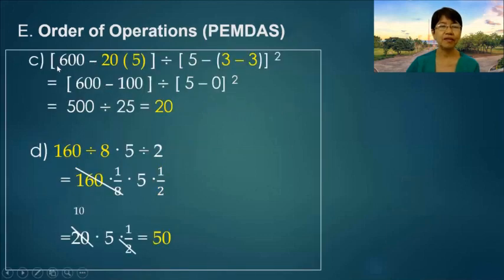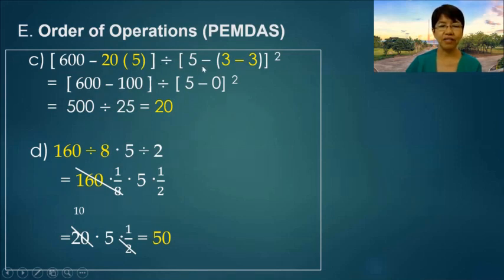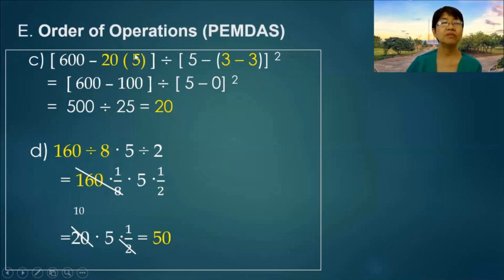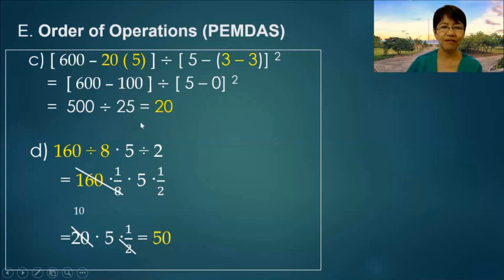Letter C: the quantity 600 minus 20 times 5, divided by the quantity 5 minus the quantity 3 minus 3, raised to the second power. We first operate on the inner expressions: 20 times 5 is 100, and 600 minus 100 is 500. Then 3 minus 3 is 0, so we have 5 raised to the second power, which is 25. So 500 divided by 25 is equal to 20.